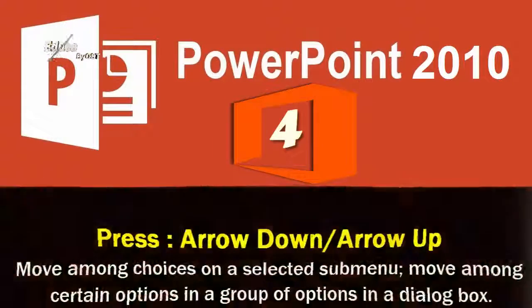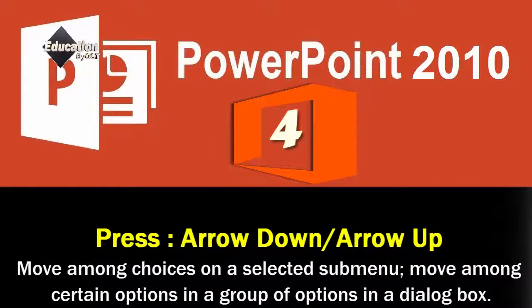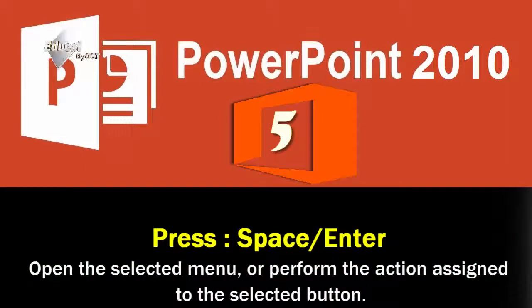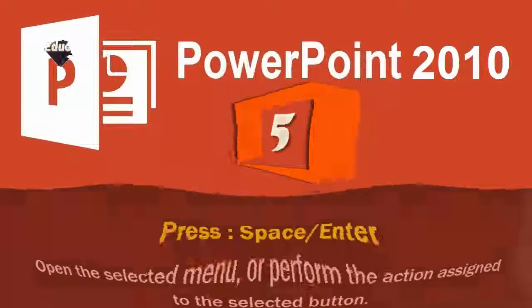Arrow Down, Arrow Up: Move among choices on a selected sub-menu, or move among certain options in a group of options in a dialog box. Space, Enter: Open the selected menu or perform the action assigned to the selected button.